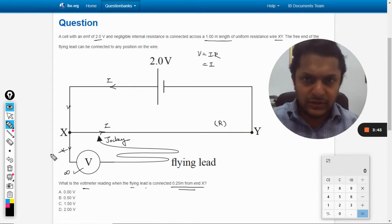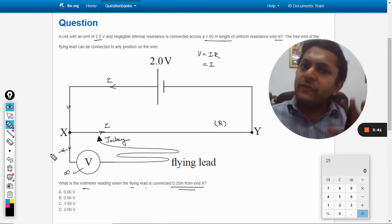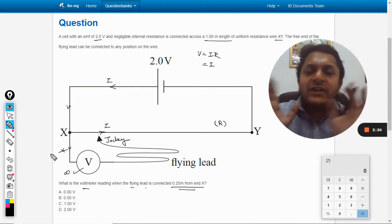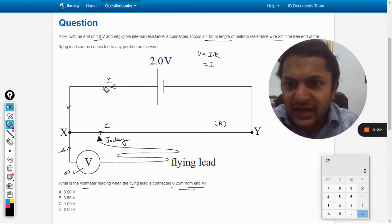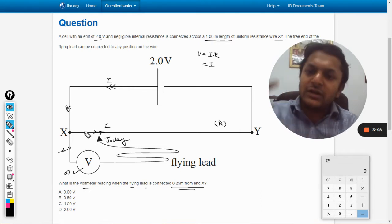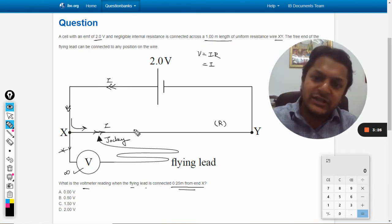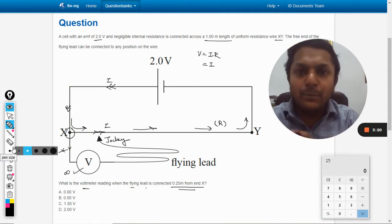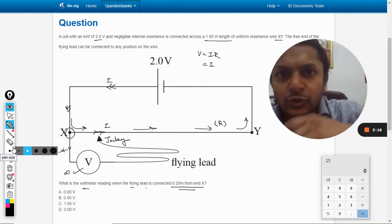The resistance of the voltmeter is infinite, so no current will enter into that branch. Current will go from this, it will go like this, and the complete current will enter into this wire. Although there is a connection at X, the current will not enter into the other branch.